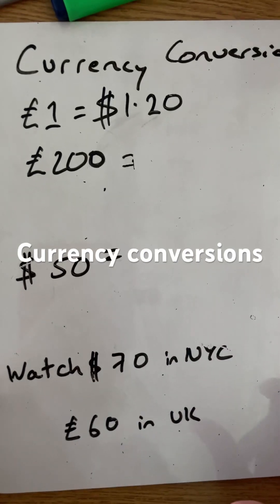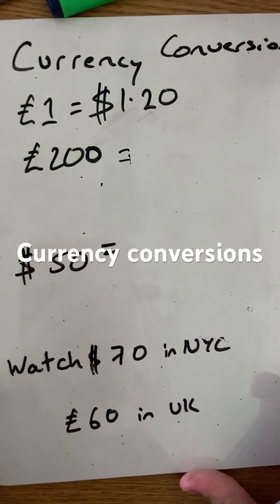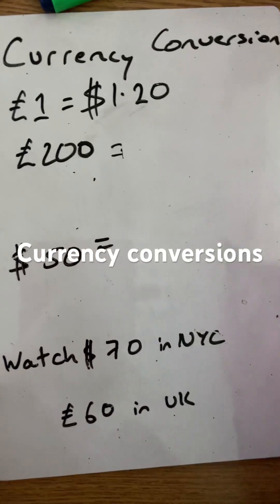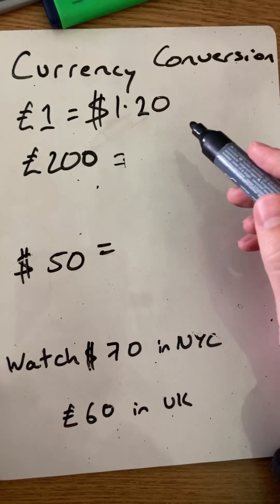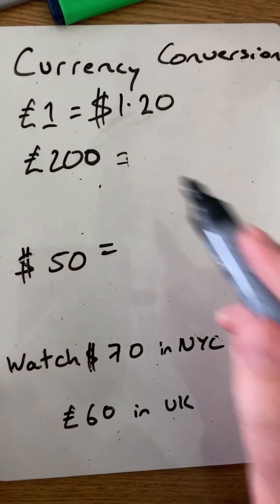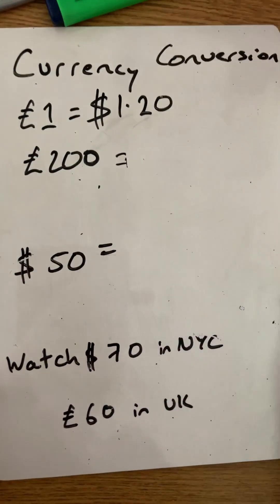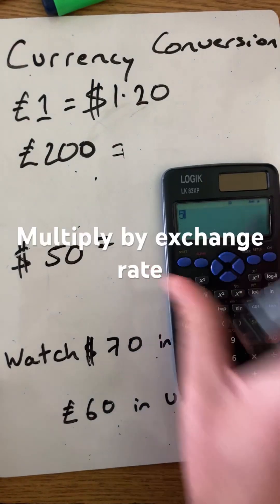Hello and welcome to Martin Maths. Let's look at some currency conversions. Say we have £1 being $1.20. How much would £200 be if we're going on a trip to America?